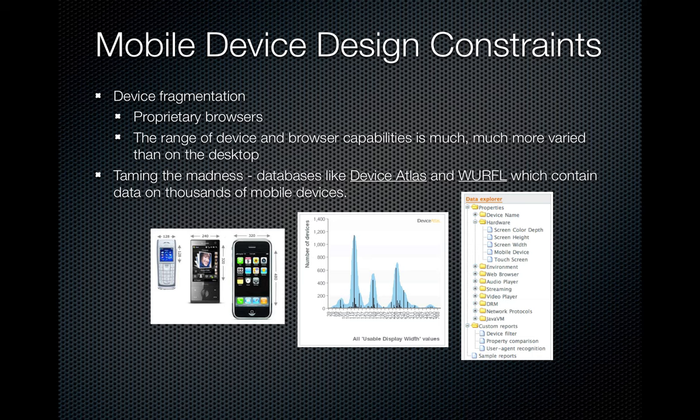There are services that aggregate data about the different range of mobile devices, such as a database called Device Atlas and something called WURFL, which collect data on all the different handheld devices they can find. You can see graphs showing how popular certain screen resolutions are, with links to hardware capabilities of each phone. These can be useful in the initial design phases to narrow down what capabilities your target audience's phones will have, because there's nothing worse than developing something and finding your target users can't use it due to hardware limitations.